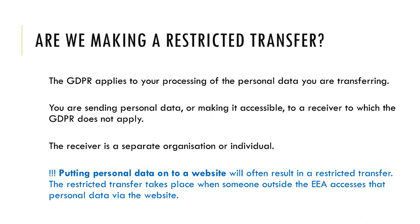You are making a restricted transfer if you collect information about individuals on paper — not ordered or structured in any way — and send it to a service company located outside the EU to put it into digital form or add it to a highly structured manual filing system. For example: a UK insurance broker sends handwritten notes about individual customers to a company in a non-EU country. Those notes are not stored on computer or in any particular order, but the non-EU company adds them to a computer customer management system — this is a restricted transfer.